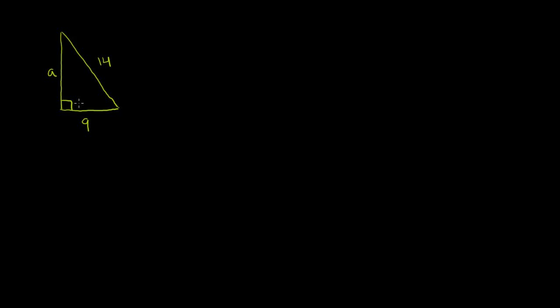So as I mentioned already, this is a right triangle. And we know that if we have a right triangle, we can always figure out, if we know two of the sides, we can always figure out a third side using the Pythagorean theorem. And what the Pythagorean theorem tells us is that the sum of the squares of the shorter sides is going to be equal to the square of the longer side, or the square of the hypotenuse.